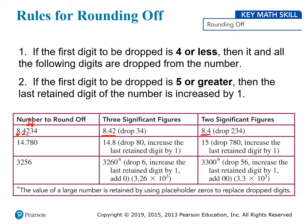The next example is 14.780. To round it to 3 significant figures, you keep the 1, the 4, and the 7, and look at the next digit, which is 8. Since that's greater than 5, you have to round up the 7 to get 14.8. To round it to 2 significant figures, you keep the 1 and the 4, and look at the next digit, which is a 7. That's bigger than 5 again, so you have to round up to get 15.